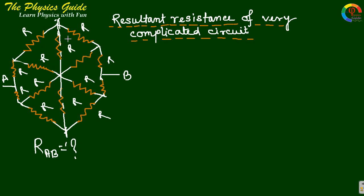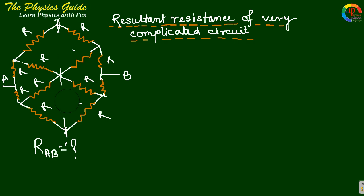For this problem it should be easier. If there is symmetry like this — opposite sides — then we can identify that these resistances have no significance. This means if there is symmetry on the left hand side and right side, then there will be no current flowing through these two resistances if we apply the potential between A and B. So we can replace this resistance.